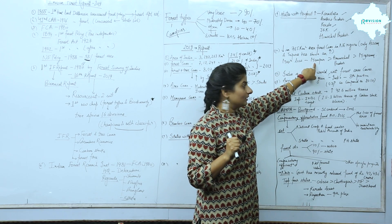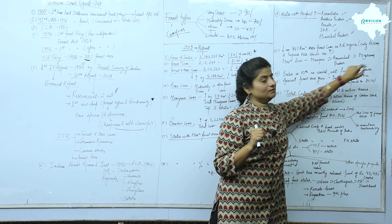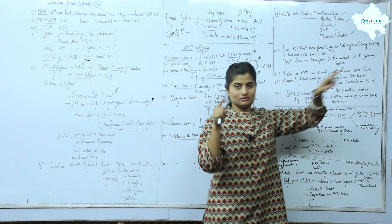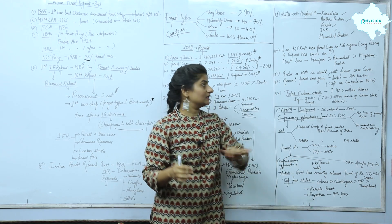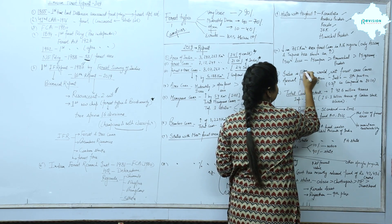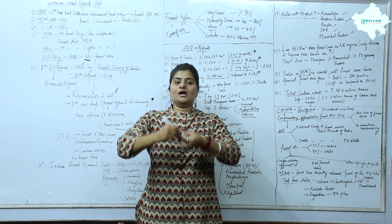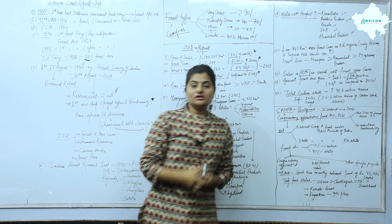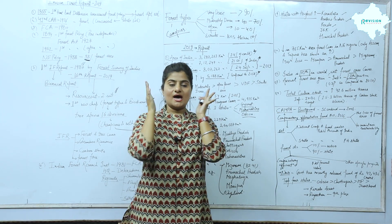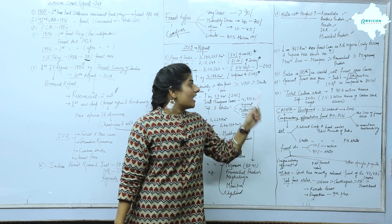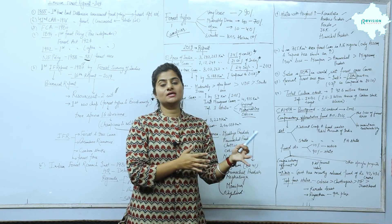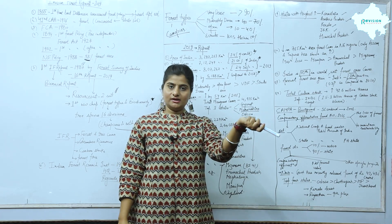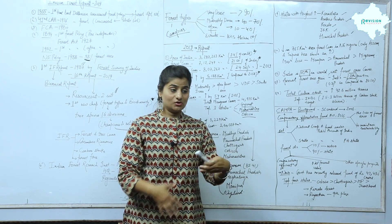The maximum forest loss in the Northeast is in Manipur, Arunachal Pradesh, and Mizoram. At the global level, India's forest area ranks 10th in the world in total forest cover. In terms of average gain in forest cover, India is at 8th position globally. India has shown positive growth of 0.3% compared to 2010 data.